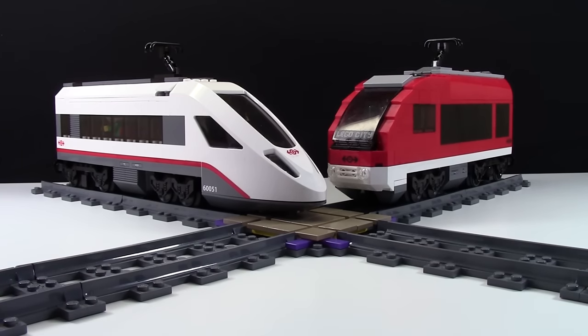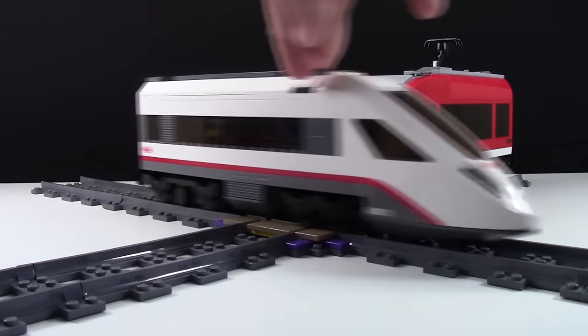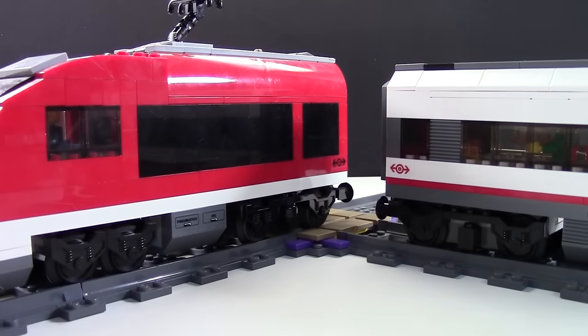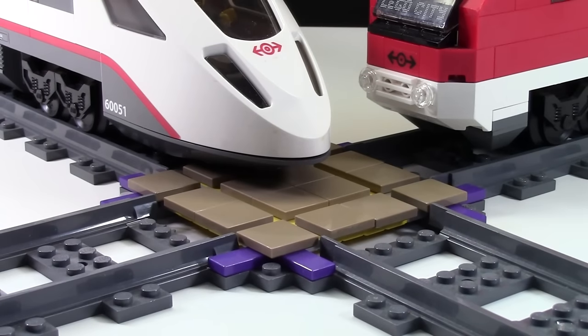Hey everybody, BrickLover18 here with a how-to video on making this four-way train crossing so your trains can continue through when tracks intersect. LEGO actually used to make an official piece like this, but they haven't made it in a long time. The only place you can find them now is on websites like Bricklink and eBay.